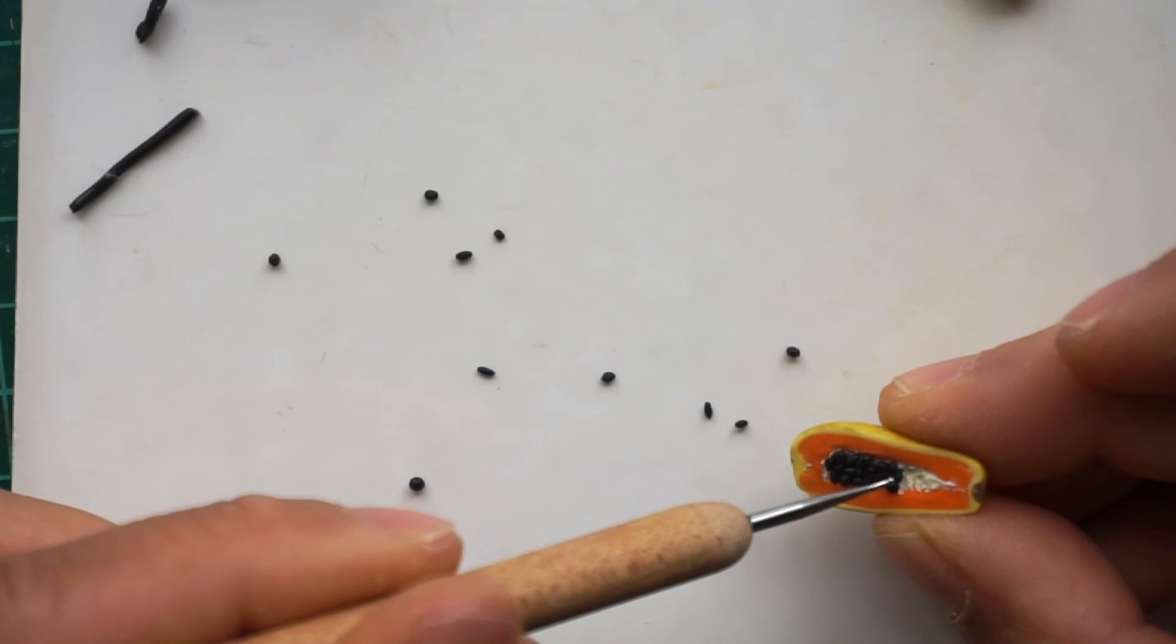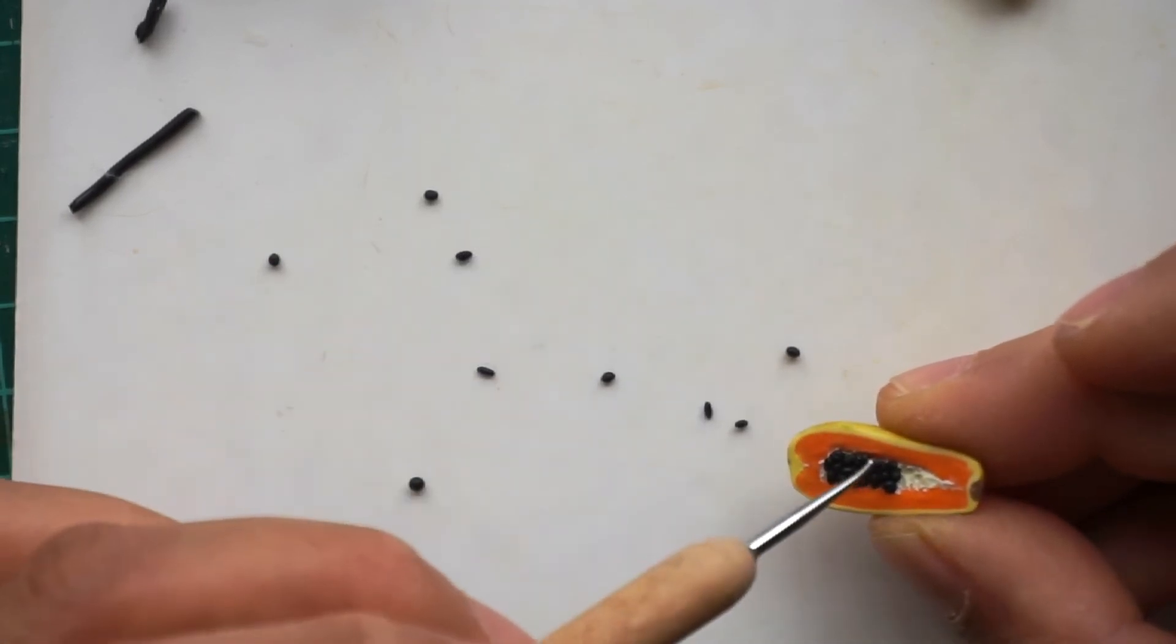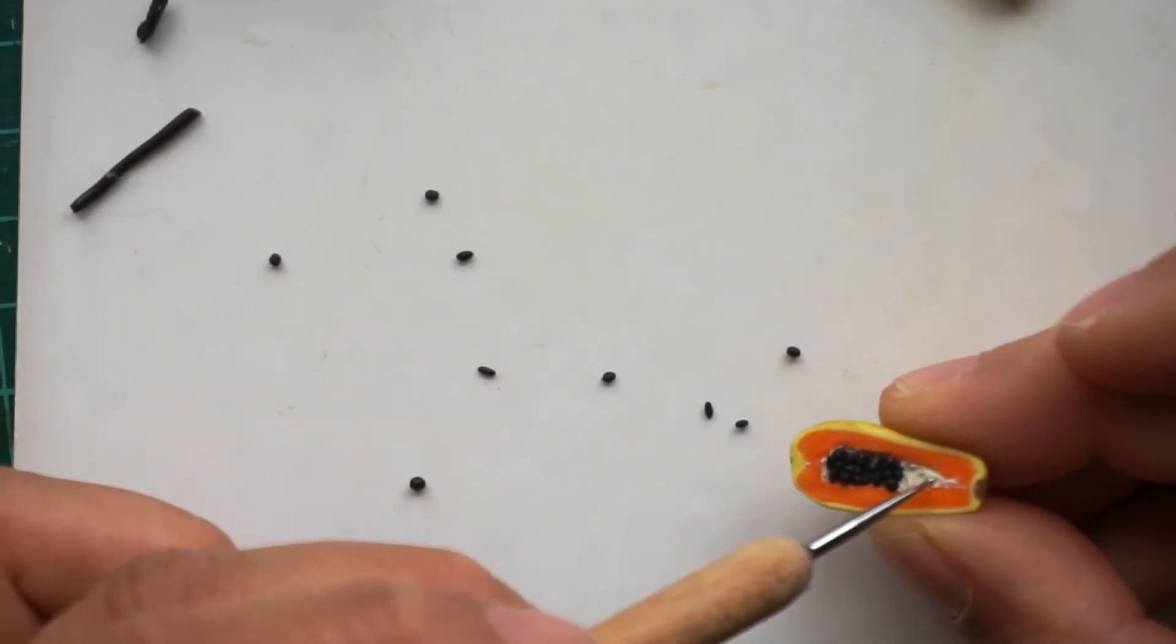After adding all the seeds, bake the papaya completely, let it cool and seal it with glossy varnish.